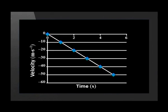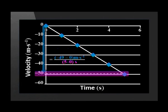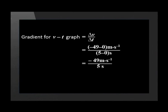We can calculate the gradient from any triangle drawn on the graph. For example, we can use the biggest triangle shown here. Delta v is minus 49 minus 0. Delta t is 5 minus 0. Including units, this is minus 49 meters per second divided by 5 seconds. This equals minus 9.8 meters per second squared, or 9.8 meters per second squared downward. This is the acceleration of the ball.